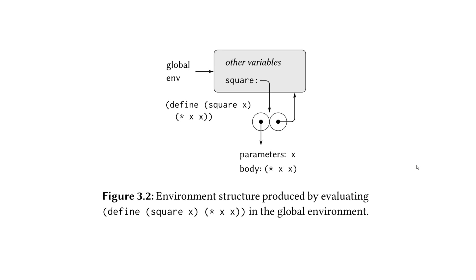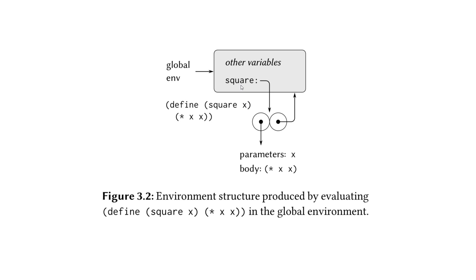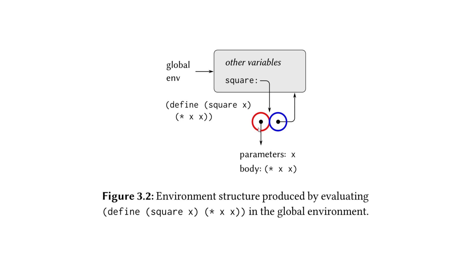Figure 3.2 is the visualization of the environment when we evaluate this define procedure. When we evaluate this it is going to define a procedure which consists of two pieces — the piece containing the parameters and the body of the procedure, and an arrow pointing back to the enclosing environment. The red piece points to the parameters and the body, and the blue piece points back to the enclosing environment. These diagrams are going to get more complicated as we go on.